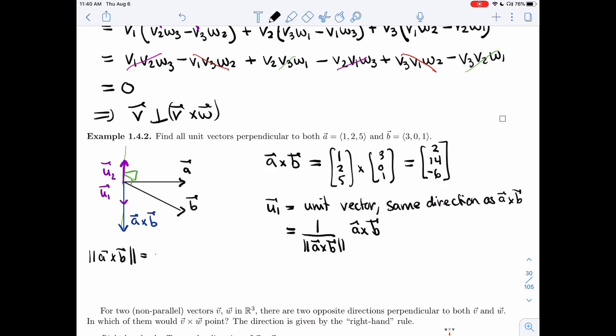Let's do it as an aside. So 2 squared plus 14 squared plus minus 6 squared. I got root of 236, and so this will be 1 over root of 236 times 2, 14, minus 6.